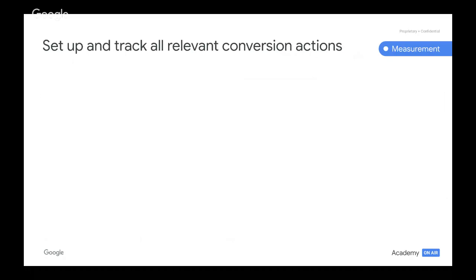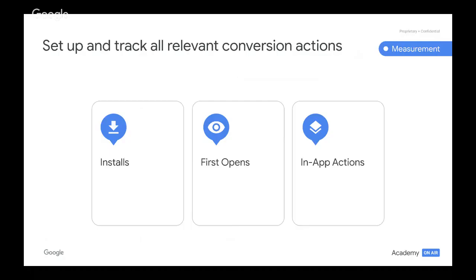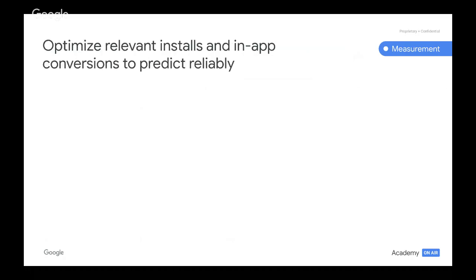Last but not least, make sure to set up tracking for all relevant conversion actions. This includes installs, first opens, and all the relevant in-app actions occurring in your app. Once this is tracked properly and accurately, it will allow you to best optimize for relevant installs and in-app conversions in order to predict reliably.